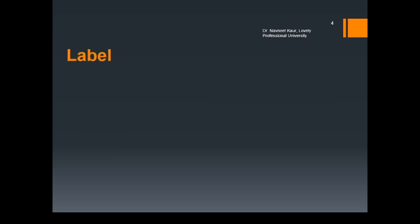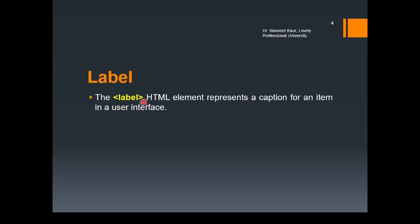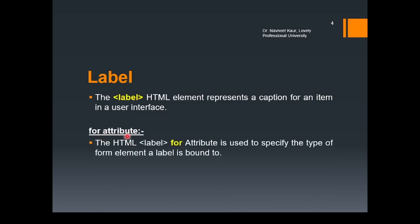The very first tag we are going to use inside the form tag is a label. The label HTML element represents a caption for an item in the user interface. Every form control will correspond to one label tag. A label consists of a 'for' attribute, which is used to specify the type of form element a label is bound to. It is equal to the ID of that specific form element.